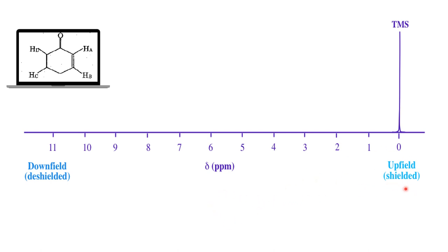Shielding versus deshielding: any proton that is shielded from the external magnetic field is said to be a shielded proton. Any proton that is deshielded — free for exposure to the external magnetic field — is said to be a deshielded proton. It needs more frequency or energy for the proton to come into resonance, and that is why it is seen at downfield. Whereas a shielded proton experiences less of the external magnetic field, so only very little external frequency is needed, and the chemical shift value appears at upfield.